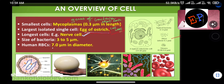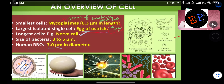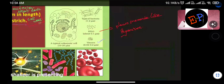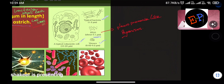Mycoplasmas are only 0.3 micrometers whereas bacteria are 3 to 5 micrometers. Human RBC is 7 micrometers — slightly bigger than bacteria. Viruses are even smaller than the smallest cells at 0.02 to 0.2 micrometers. PPLOs (pneumonia-like organisms) are 0.1 micrometers. A typical bacterium ranges from 1 to 5 micrometers.